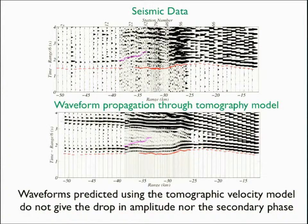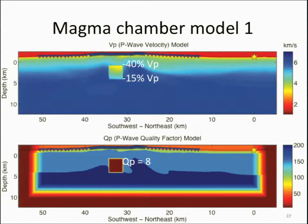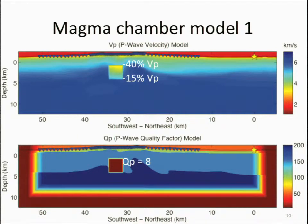In this magma chamber model, we have a mush zone — more melt at the top and more crystals accumulating at the bottom. In these models you have to specify VP, VS, density, and attenuation, and this shows the boundaries that absorb the waves so they don't rattle around in the computational box.